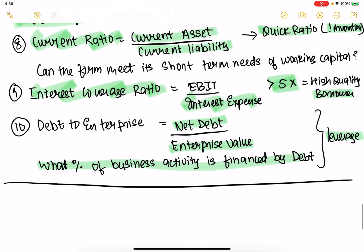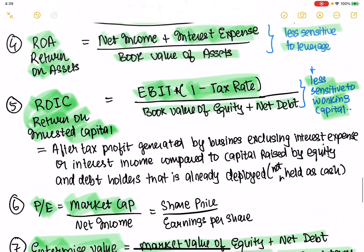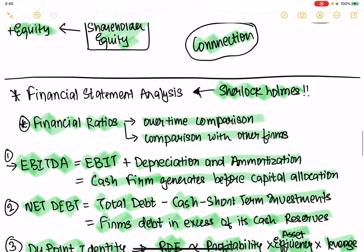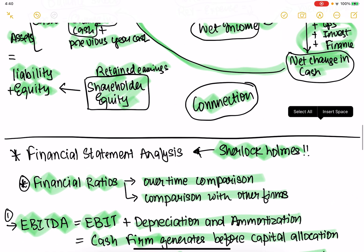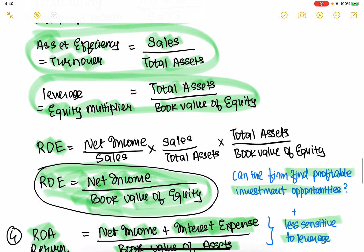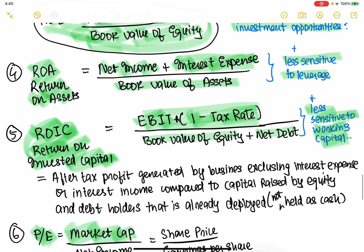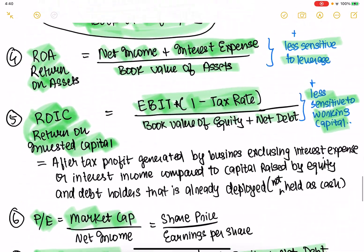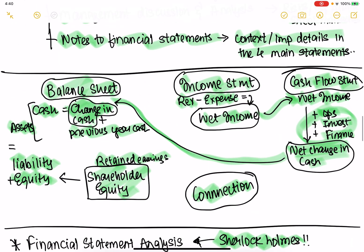Interest coverage measures whether the company can meet its interest expenses to debt holders — if it's greater than 5x, it's a really good borrower. Net debt divided by enterprise value gives you the leverage, telling you what percentage of the business is financed by debt. So these are the 10 metrics, though they are not the only 10 — there are many different metrics to investigate how a firm is doing.